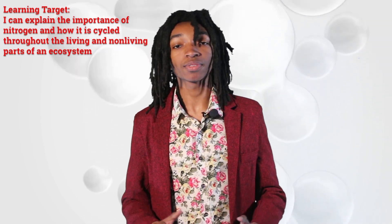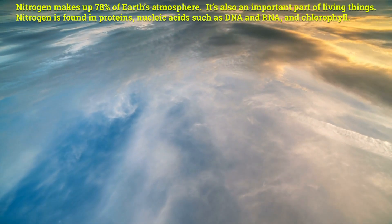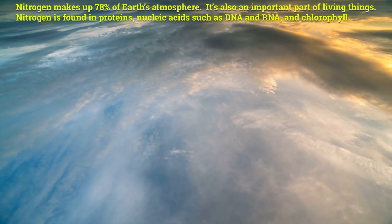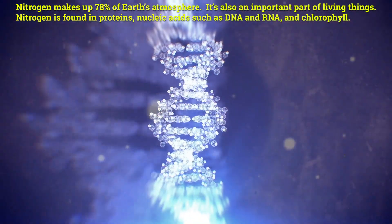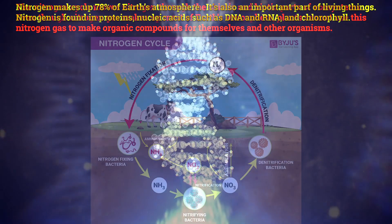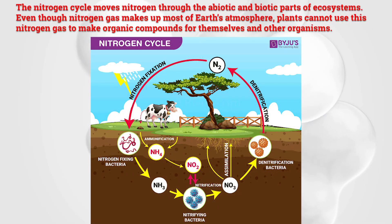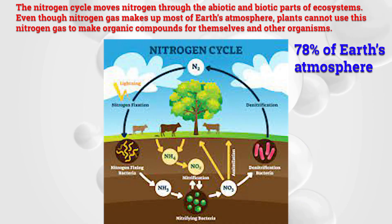Our learning target for today is: I can explain the importance of nitrogen and how it is cycled throughout the living and non-living parts of an ecosystem. Nitrogen makes up 78 percent of Earth's atmosphere. It's also an important part of living things — nitrogen is found in proteins, nucleic acids such as DNA and RNA, and chlorophyll. The nitrogen cycle moves nitrogen through the abiotic and biotic parts of ecosystems.